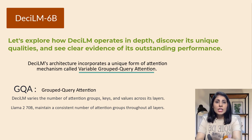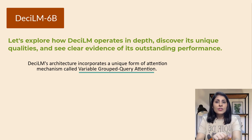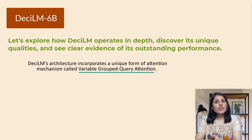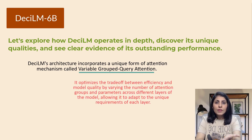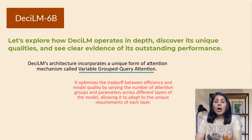By tailoring the attention grouping to each layer's specific needs, DesiLM achieves an optimal balance. DesiLM's Variable Grouped Query Attention is a novel approach to attention mechanisms in transformer models. It optimizes the trade-off between efficiency and model quality by varying the number of attention groups and parameters across different layers, allowing it to adapt to the unique requirements of each layer. This innovation sets DesiLM apart from other transformer architectures like LLaMA2 70B.